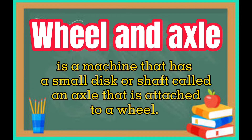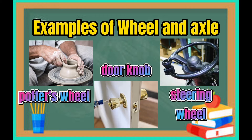Wheel and axle. It is a machine that has a small disc or shaft called an axle that is attached to a wheel. Potter's wheel, doorknob, and the steering wheel are examples of wheel and axle.